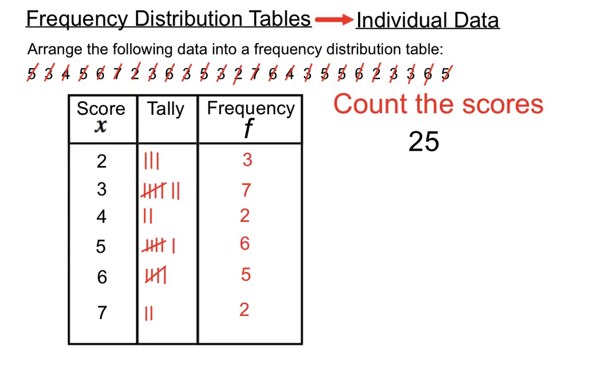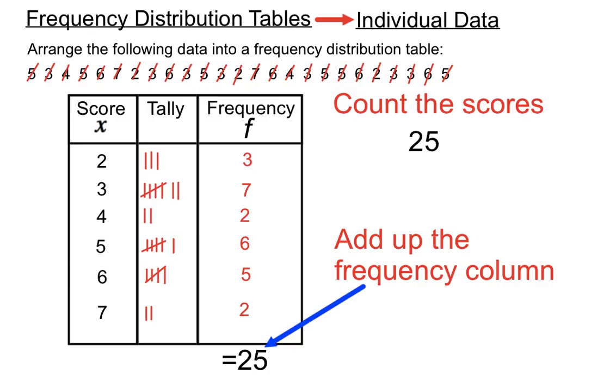And as a double check, we should add up the frequency column and make sure we do have 25 scores accounted for there. In this case, 7 plus 3 is 10, plus 2 is 12, 18, 23, 25 scores in the frequency column. So that adds up nicely, so we can be confident we've processed all the numbers quite nicely there.